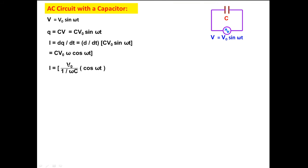Why we are writing 1 by ωC? Then it will be Cv₀ω. The reason is current from Ohm's law: current is equal to V by R. So this 1 by ωC is the capacitive reactance. And then we can write this one as I₀ sin (ωt + π/2).